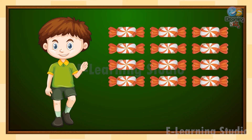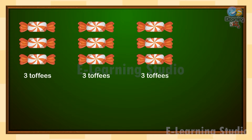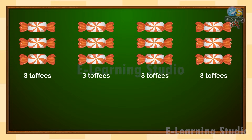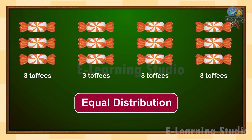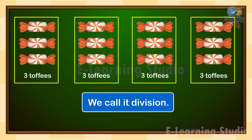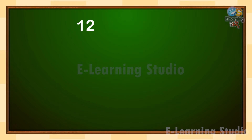He distributes the toffees equally. Each friend gets 3 toffees. This is called equal distribution, and we call it division. We write it as 12 divided by 4 is equal to 3.